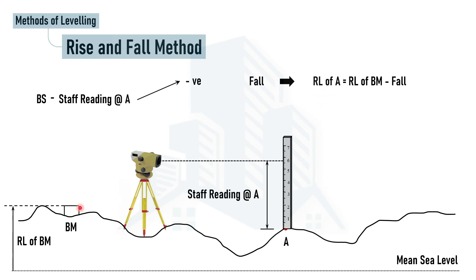To calculate the reduced level at point A in the rise and fall method: take the reduced level of the benchmark and subtract the fall value obtained from the difference of staff readings. That gives the reduced level at point A. The difference in staff readings represents the vertical difference between the two points.